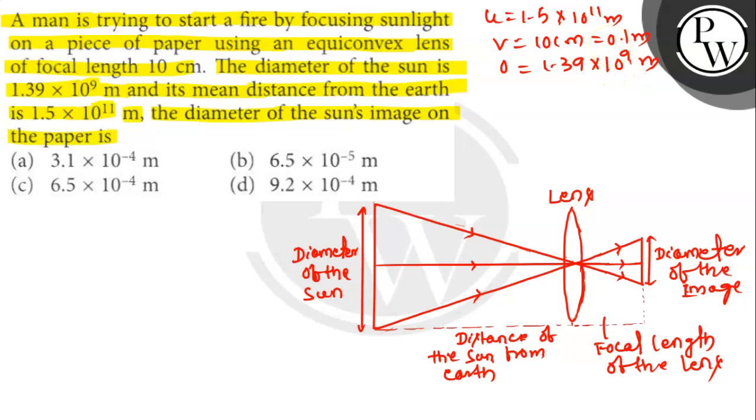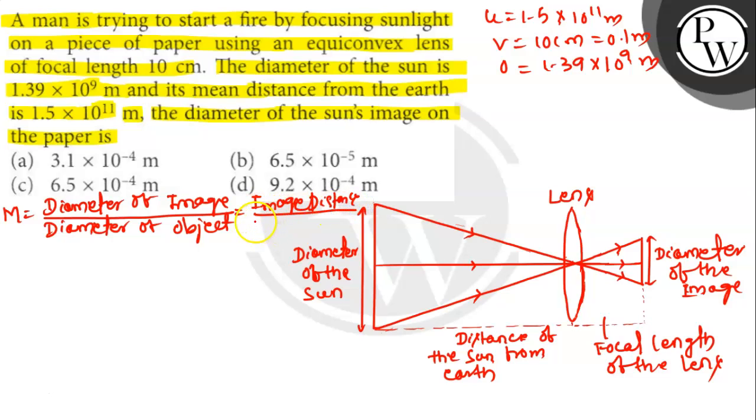Expression of magnification is given by: let the diameter of the image of the sun be I. It is equal to diameter of image divided by diameter of object. So that will be image distance divided by object distance. So it can be written as I/O equals V/U. Rearranging the above equation we get I equals O times V divided by U.